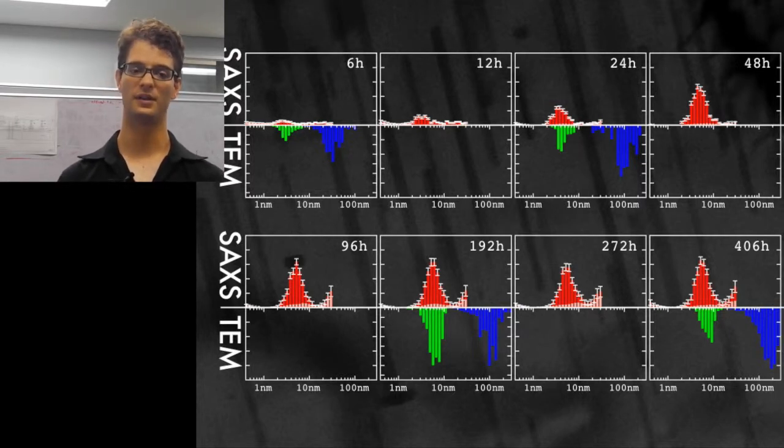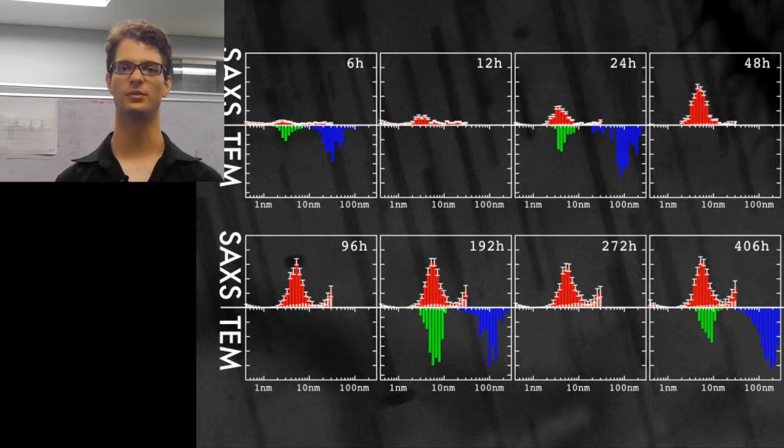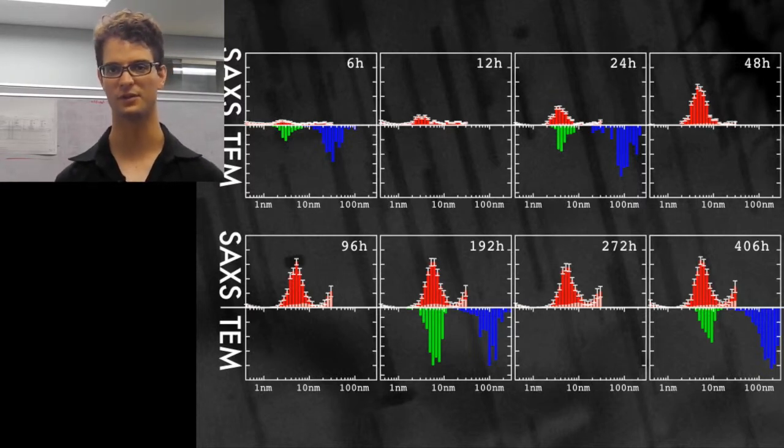The second thing to note is that the electron microscopy distributions have been obtained by painstakingly hand-measuring 500 precipitates for each of these comparisons, whereas the results from X-ray scattering have been obtained over trillions and trillions of these precipitates.